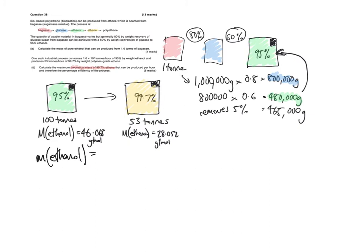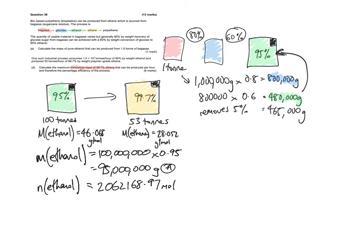So how are we going to do that? We have to work out the mass of ethanol is going to be equal to, for 100 tonnes, which is 100 million grams, times 0.95, which will be equal to 95 million. Now I have that value in my calculator, I can save it as A. Then I can work out the number of moles of ethanol. So the number of moles of ethanol, we take that value divided by 46.068, which is the molar mass of ethanol, and I get 2,062,168.97 mole.